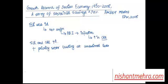Priority sector lending was done at concessional rates. So with SLR high, CRR high, and people not having enough money to invest, lending was already costly. On top of that, priority sector lending meant loans had to be given to the priority sector at concessional rates. So whatever was left for the non-commercial sector meant that the lending rates for the non-commercial sector remained very, very high.